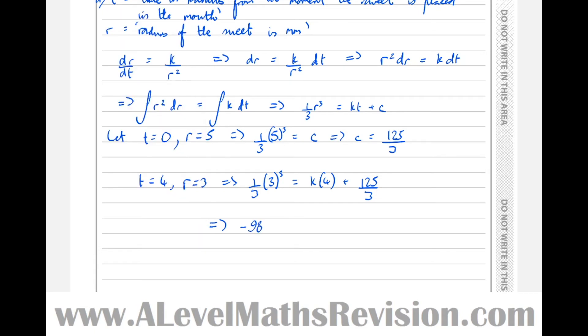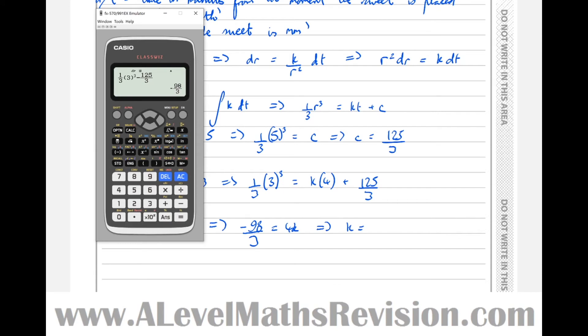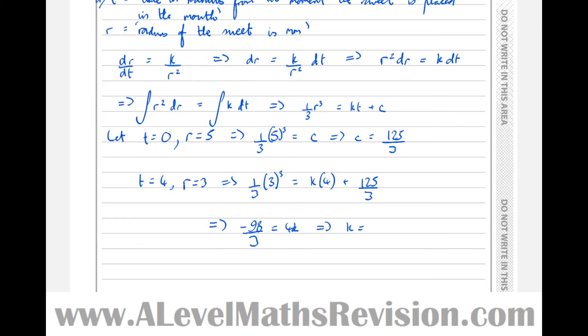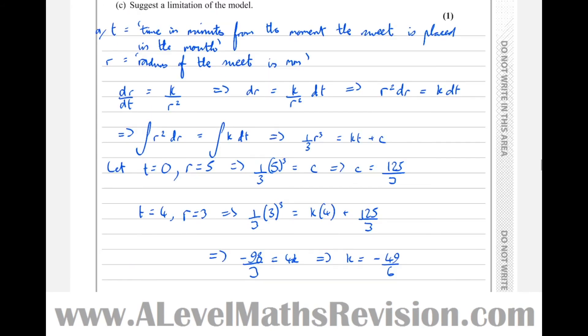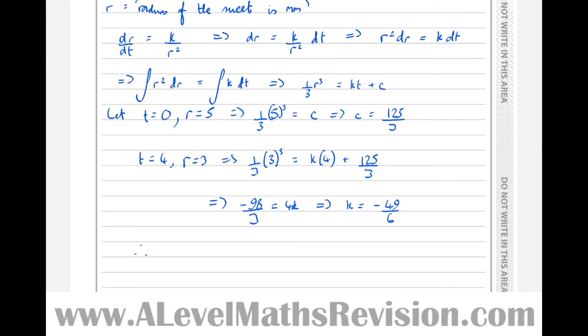So minus 98 over 3, that becomes minus 98 over 3 equals 4k, which means that k equals, so minus 98 over 3 divided by 4, so minus 98 over 3 divided by 4 equals minus 49 over 6. So k equals minus 49 over 6, therefore we're ready to write the equation now. So the equation was here, a third r cubed equals k, which is minus 49 over 6t, plus c, which is 125 over 3.